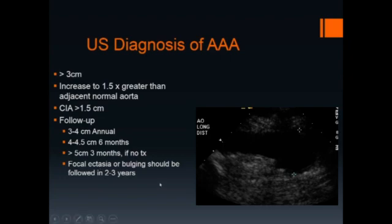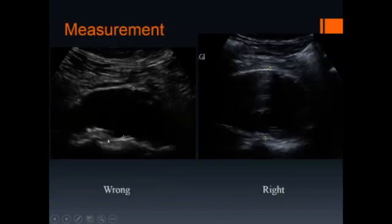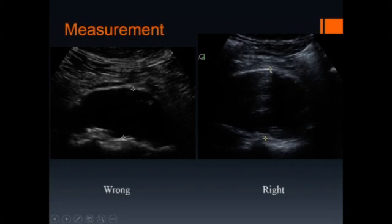Focal ectasia or bulging should be followed every 2 to 3 years. On the left is the wrong way to measure an abdominal aortic aneurysm — the calipers have been placed on the inner or intimal surface of the aorta. On the right is the correct way: the measurement caliper has been placed on the outer surface of the aorta, and the correct distance is from the outer surface to the outer surface of the aorta.